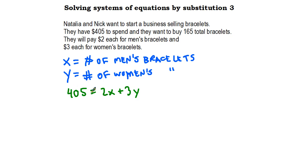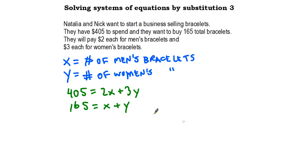They have to add up because there's no more money than that. Next, we want 165 total bracelets. Since x is the number of men's bracelets and y is the number of women's bracelets, if the total is going to be 165, then x + y = 165. Hopefully you can see that substitution would be a good way to solve this, because we can easily get one variable by itself. I'll call these equation 1 and equation 2.